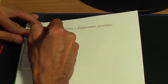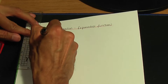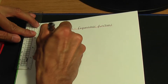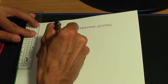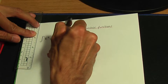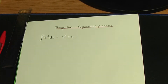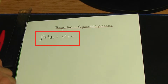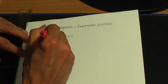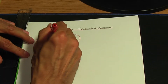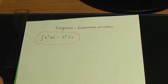So whenever you integrate e to the power of x with respect to x, the result is e to the x plus c. This is the standard result for when you integrate e to the x.